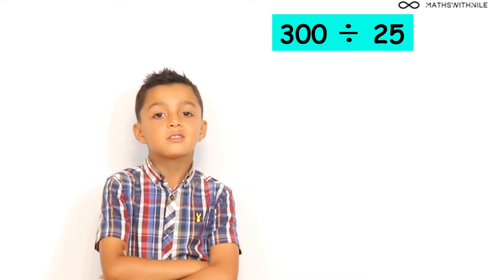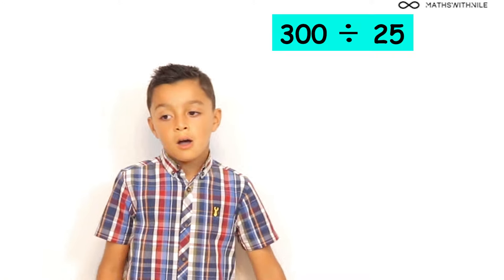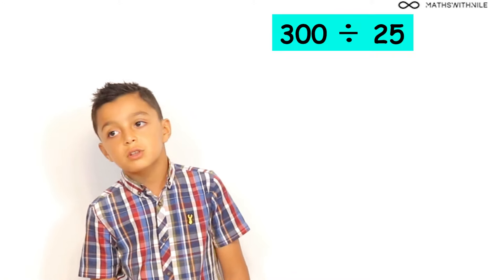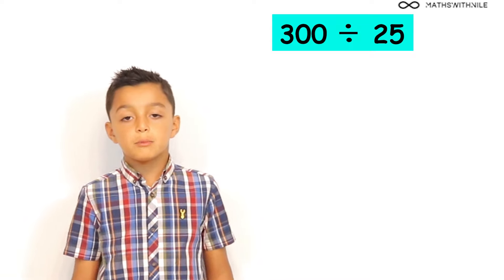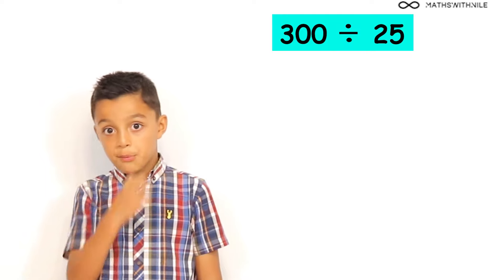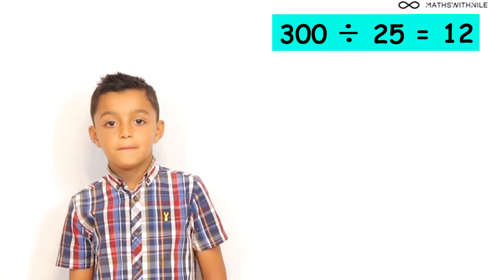What is 300 divided by 25? 300 divided by 25. There are 4 25s in 100. So, 3 times 4 is 12. So, the answer is 12. Excellent Niall. Excellent.